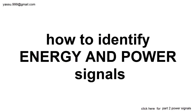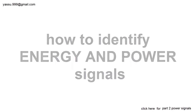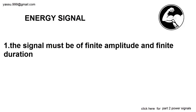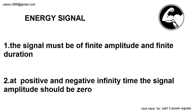Hi friends, in this video I am going to explain some rules so that you can easily identify energy and power signals. Energy signal has two rules. The first one is the signal must be of finite amplitude and finite duration. The second one is at t tends to plus infinity and minus infinity, the amplitude of the signal must be equal to zero. These two conditions are must.